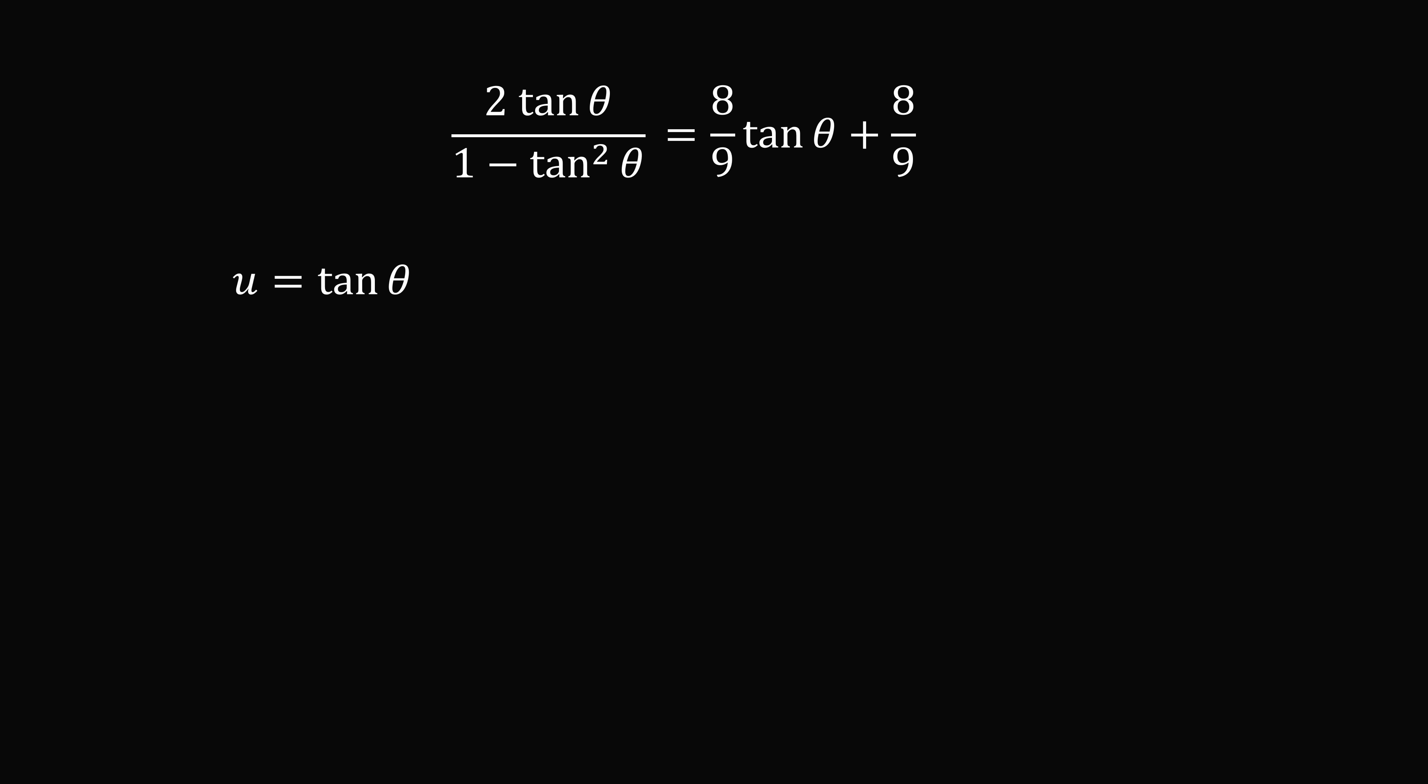Let u be equal to tangent of theta. So, we can substitute in here. We now have one equation just in the variable u. We'll now simplify this equation. We'll multiply both sides by 1 minus u squared. Then we'll multiply both sides by 9. Then we will distribute and move everything over to one side. So, we have a cubic equation: 4u cubed plus 4u squared plus 5u minus 4 is equal to 0.